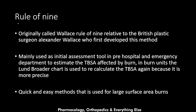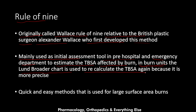The rule of nine is originally called the Wallace rule of nine, named after British plastic surgeon Alexander Wallace who first developed this method. It is mainly used as an initial assessment tool in the pre-hospital and emergency department settings to estimate total body surface area affected by the burn. When the patient reaches the burn unit, the Lund and Browder chart is used to recalculate more precisely, as it is always more accurate. It is a quick and easy method used for large surface area burns.